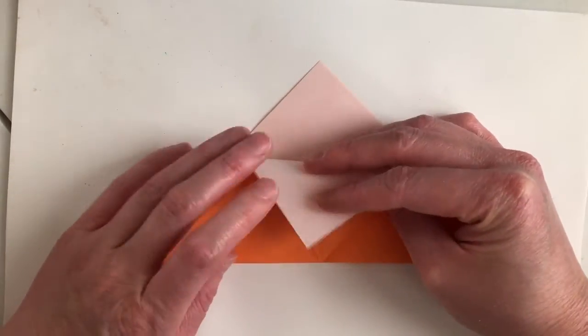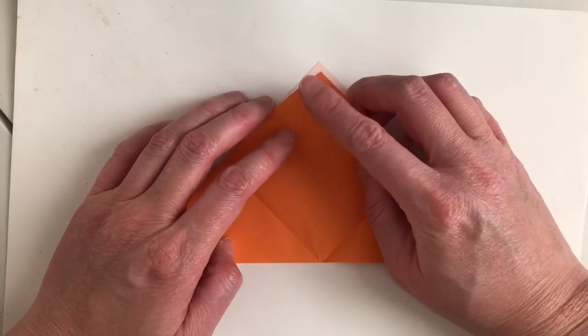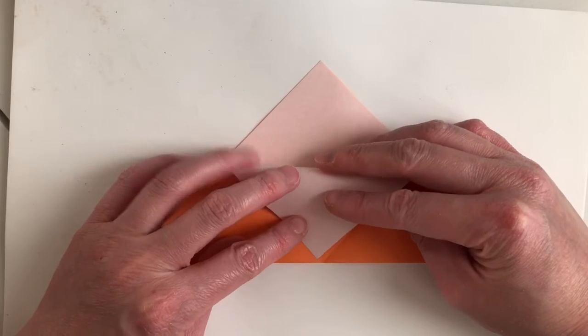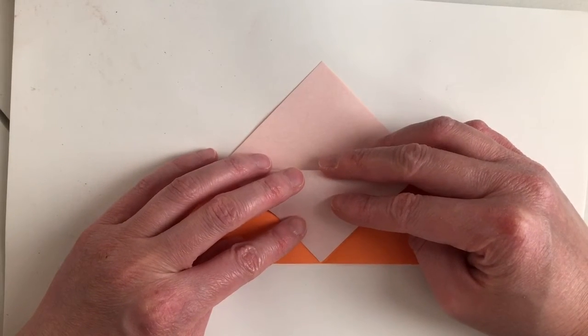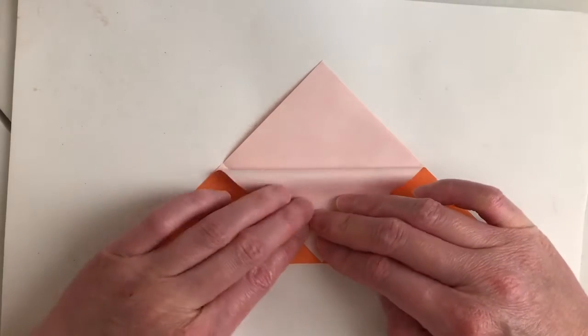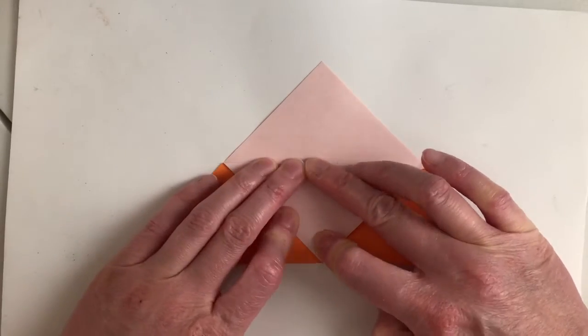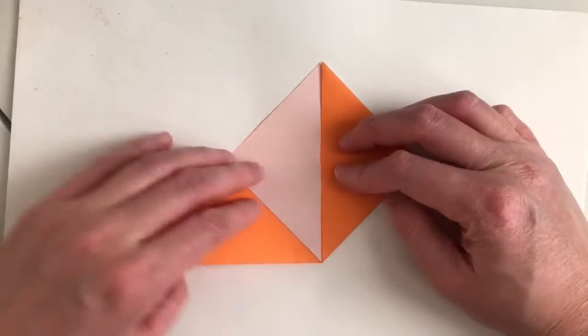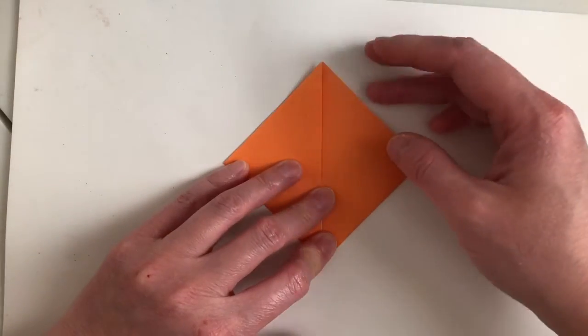Take the top corner, just one piece, and fold it down to the bottom corner. Make our crease. And then fold up our two flaps again.